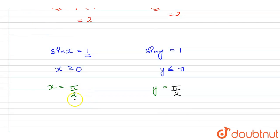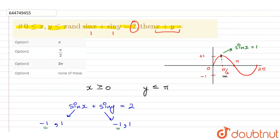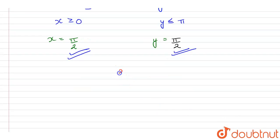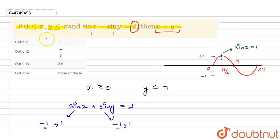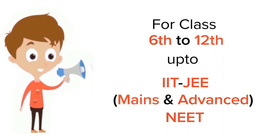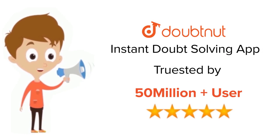We have the value of x equal to π/2 and the value of y equal to π/2. We need to find x plus y, so x plus y equals π/2 plus π/2, which equals 2π/2, or simply π. The value of x plus y is equal to π, so option number one is the correct answer.